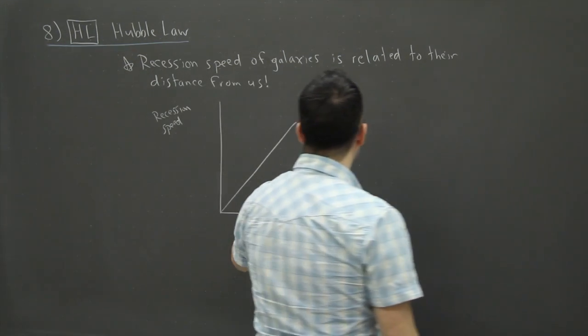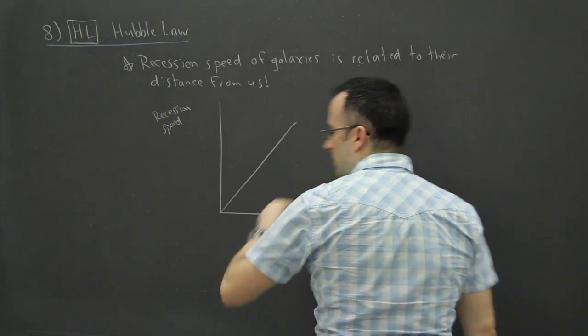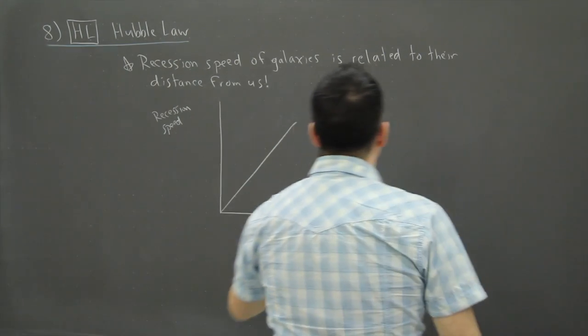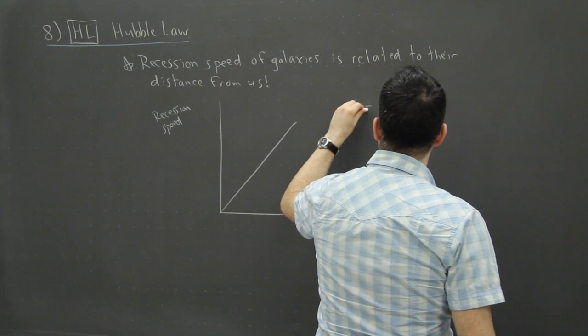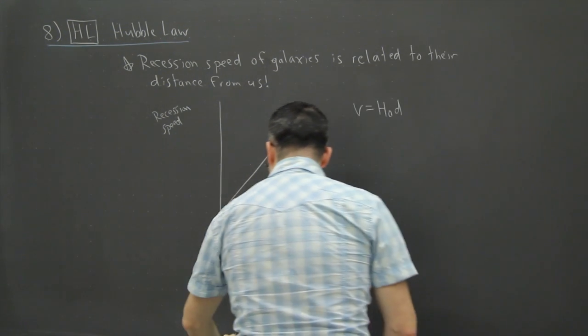As a result, we can write this equation here. Now this is in your data booklet. They say it's V equals H zero D. This is the key thing here.